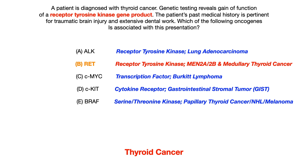Choice C, CMYC — that gene product is a transcription factor, and it's associated with Burkitt lymphoma. There are two ways you could eliminate choice C: first, by recognizing it's a transcription factor, not a receptor tyrosine kinase; or second, by knowing it's associated with Burkitt lymphoma, not thyroid cancer.